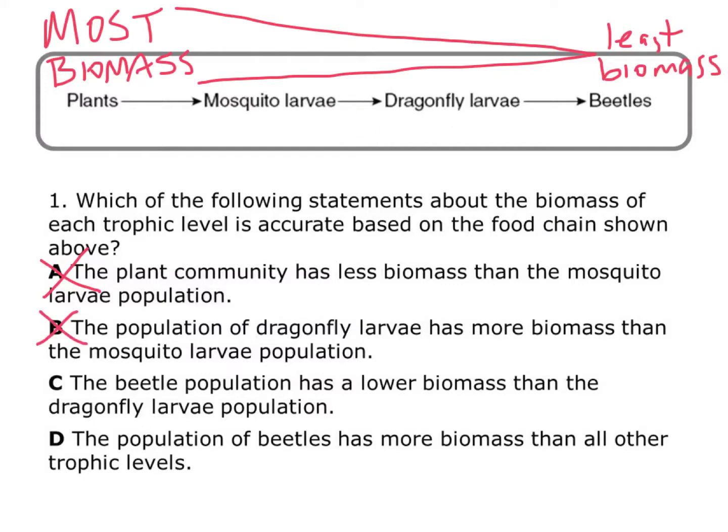Answer C says the beetle population has a lower biomass than the dragonfly larvae population. The beetle population has the least amount of biomass in this ecosystem, so they would have less biomass than the dragonfly larvae — they are after the dragonfly larvae in the food chain. That matches up with everything, and it looks like C is the right answer.